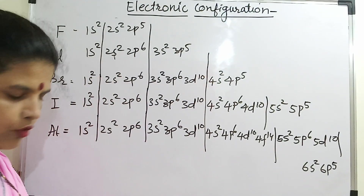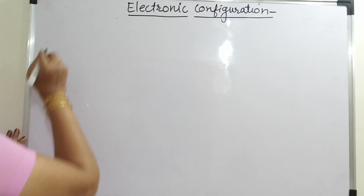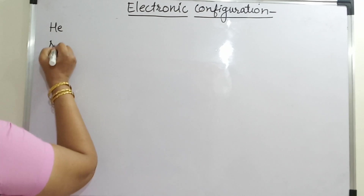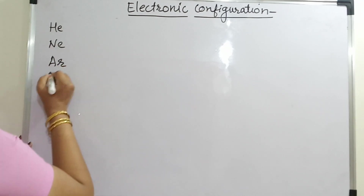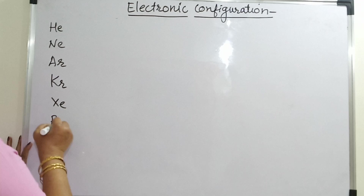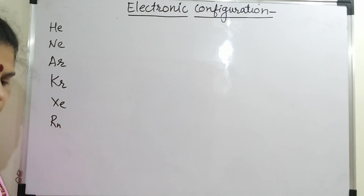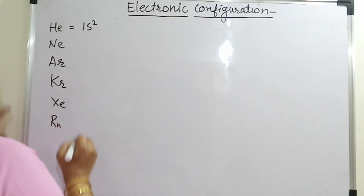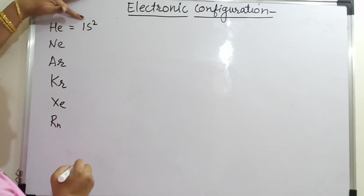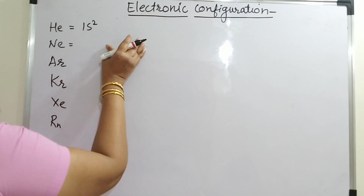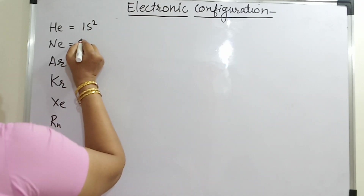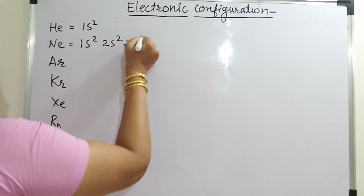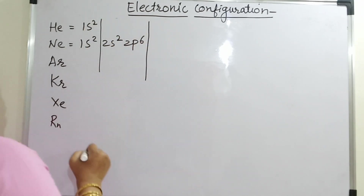Come to group 18. Group 18 elements are helium, neon, argon, krypton, xenon and radon. For helium it is 1s2 — the first principal quantum number is completely filled. For neon: 1s2, 2s2, 2p6 — first and second principal quantum numbers are over.